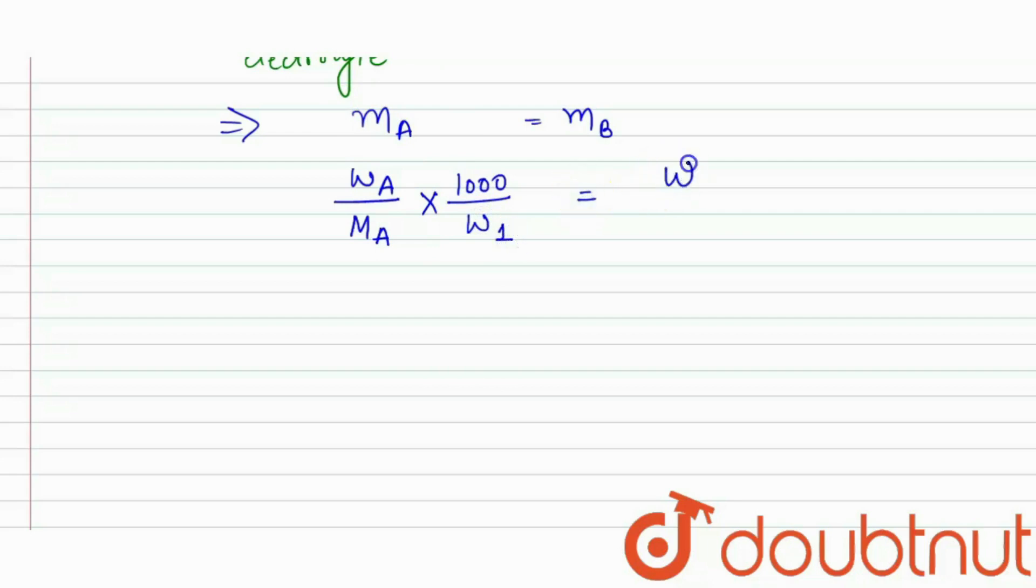Is equal to WB into 1000 upon molar mass of B, suppose W2. We are given that the A solution is 4% aqueous. If it is 4% aqueous, then we can say that it has 4 gram of solute in the 100 grams of solution.